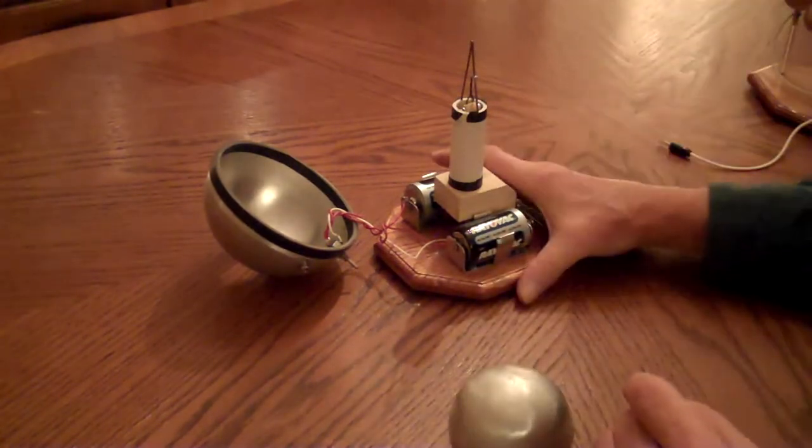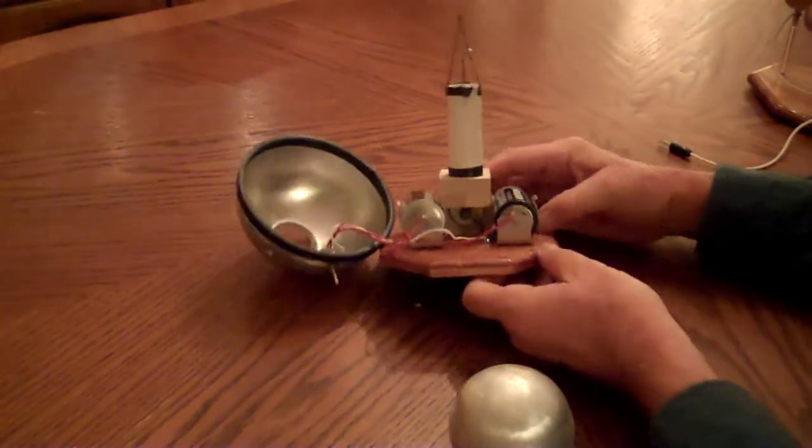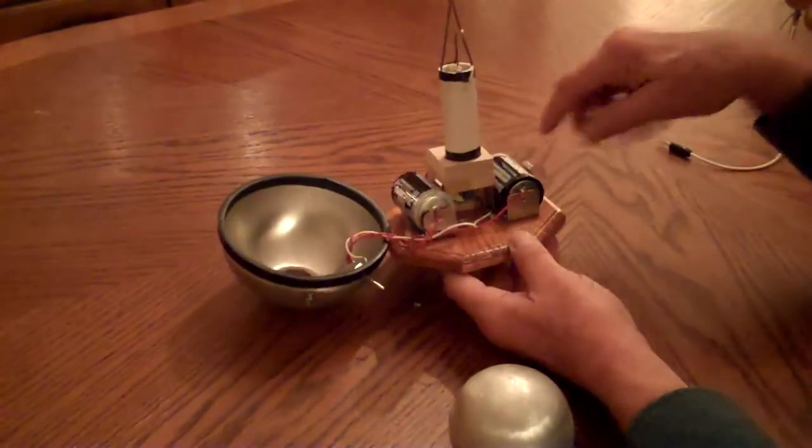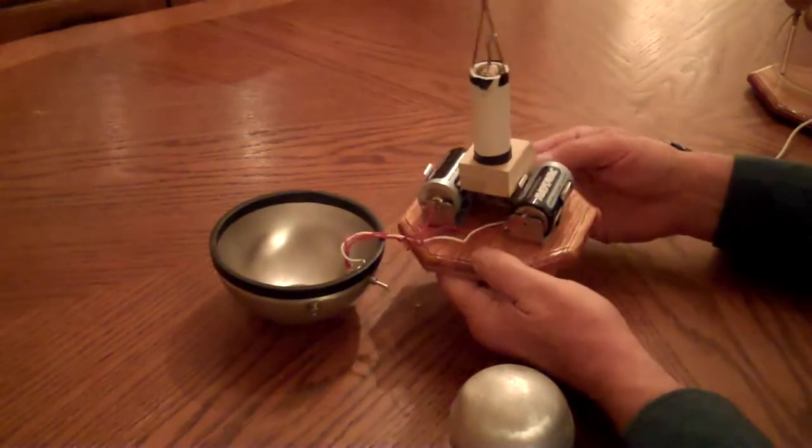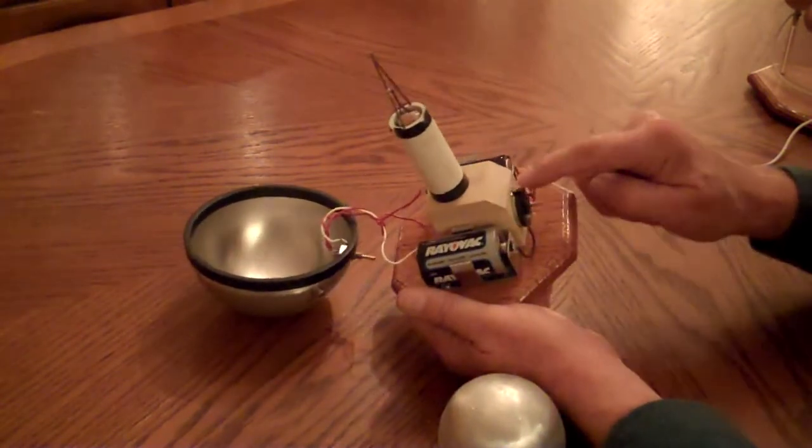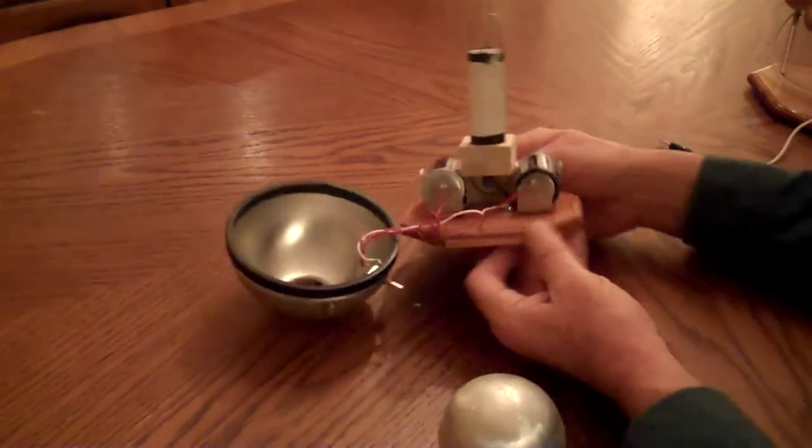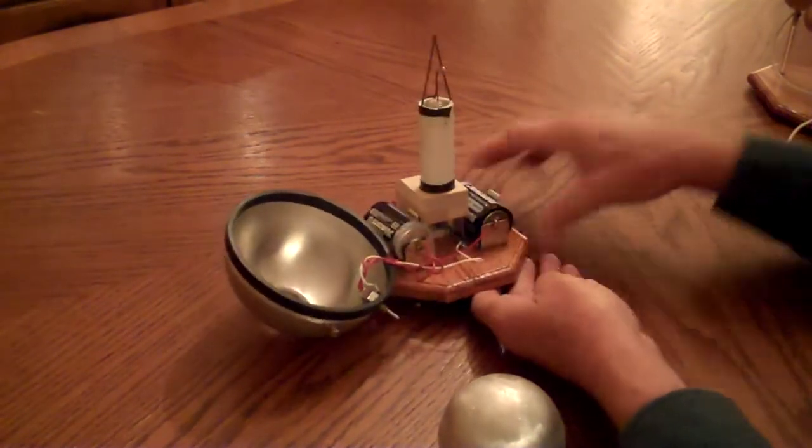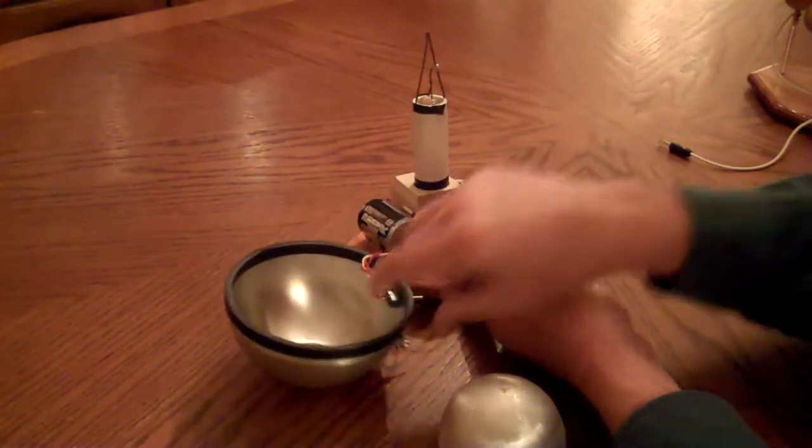This is the motor and brush assembly. We have two D-cell flashlight batteries, a little motor here that's mounted in this wooden block and has a charge brush on the bottom that's connected to the bottom hemispherical globe.